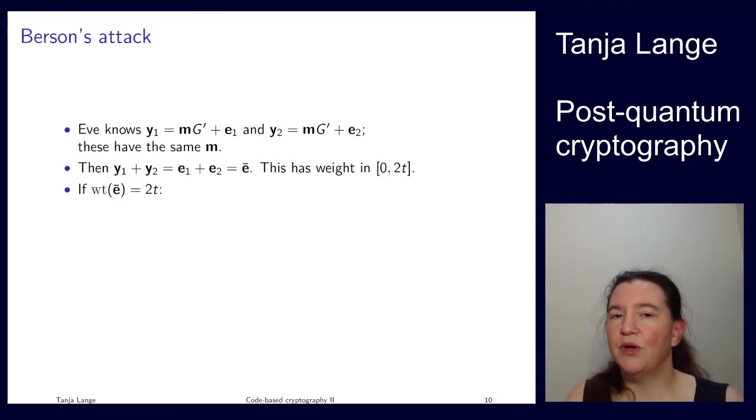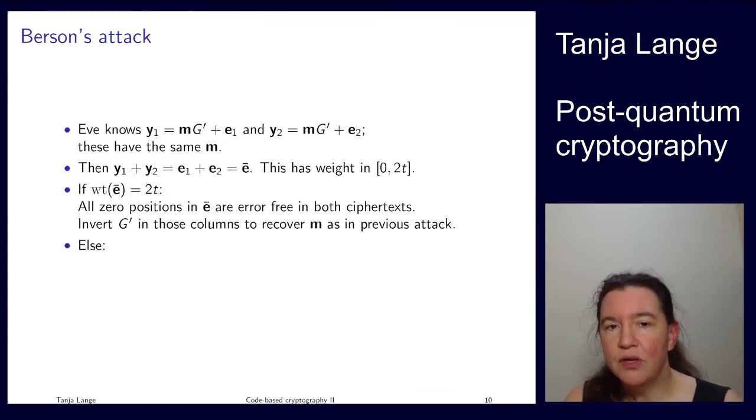What you see is, what is the weight of e-bar? One possibility is it has a weight exactly 2t. So that means there was no cancellations between the positions of e1 and e2. Well, n is a lot larger than t, n is still a lot larger than 2t. So you actually have knowledge of n minus 2t positions, which are error-free. And so, similar to what we just did in the sloppy Alice attack, you can invert g prime in those columns, or find a subset of k by k, and then you can recover m. So this is actually the easiest case. So seeing something where the error is large, it's 4, 2t, it's already done.